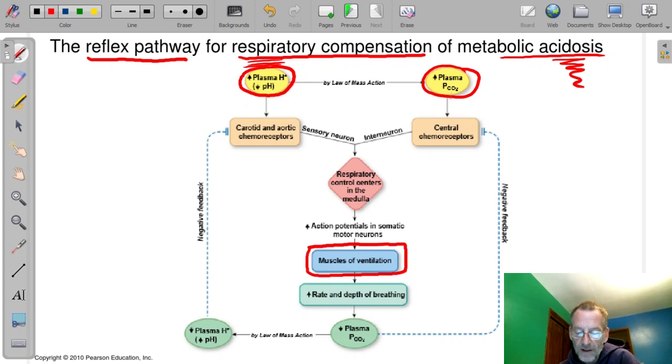Remember that the CO2 in the plasma stimulates the central chemoreceptors. It's able to diffuse into the cerebral spinal fluid and it binds those chemoreceptors. And remember what happens to the CO2 in the CSF.